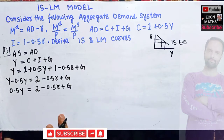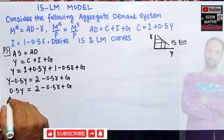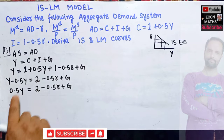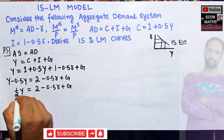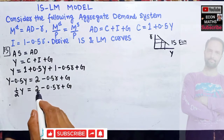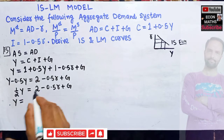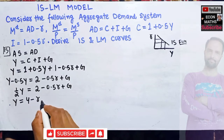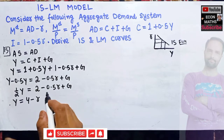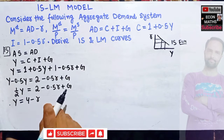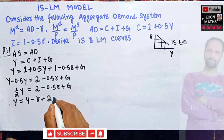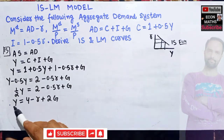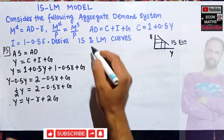Writing 0.5Y as (1/2)Y and transposing — multiplying each term by 2 — gives us Y = 4 − r + 2G. This is our IS equation. We can see there is a negative relationship between rate of interest and GDP here, which is why the IS curve has a negative slope.